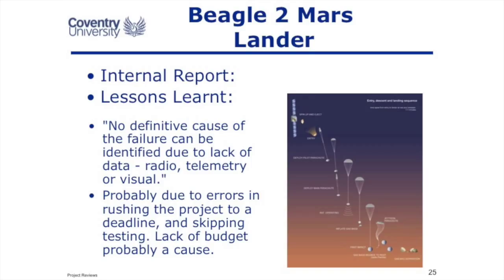Or this example of the Mars lander, Beagle. Of course, they don't really know why it crashed because they don't have the data. But the suggestion in the internal report — the lessons learnt — was that they rushed the project. Aiming for a timescale when you can only launch to Mars at certain times of the year when Mars and Earth are in favourable conditions, and a lack of budget. Think back to the NASA video where they said a lack of budget leads to mistakes.